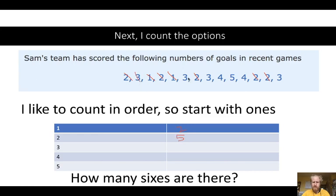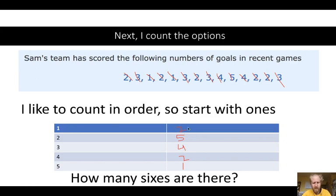I have my 3s — 1, 2, 3, 4. How many 4s do I have? 1, 2. And how many 5s? 1. Now the numbers on the right-hand side are just the frequency — it's how many times did the number on the left show up. How many 1s? There are 2. How many 2s? There are 5. How many 3s? There are 4 threes.